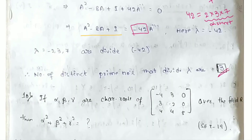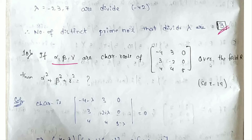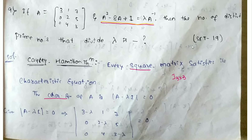Moving to the second question. If α, β, and γ are the characteristic roots of some matrix, we need to find the required expression. This question is from the 2019 paper.